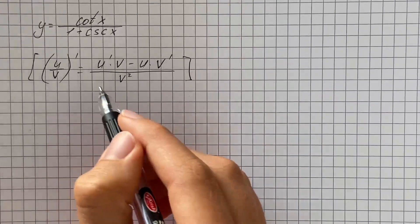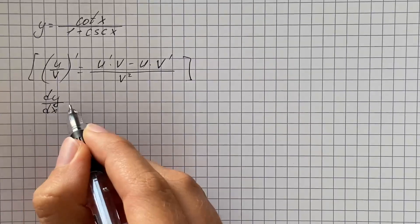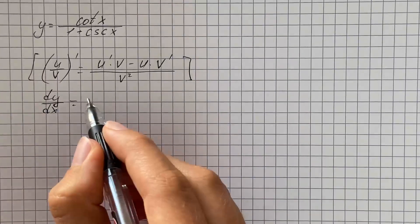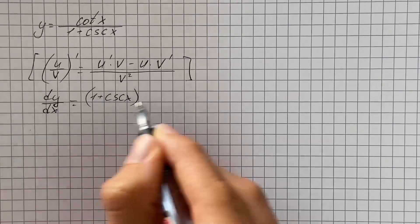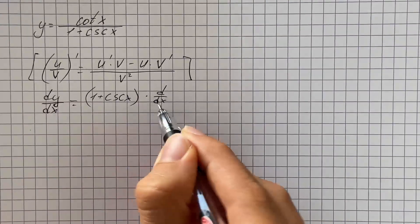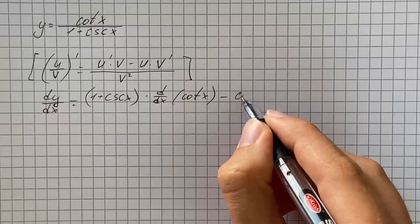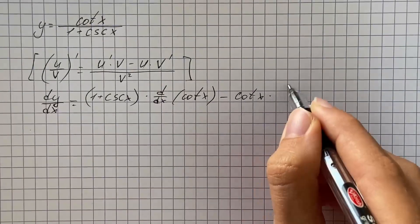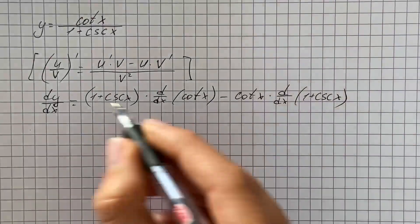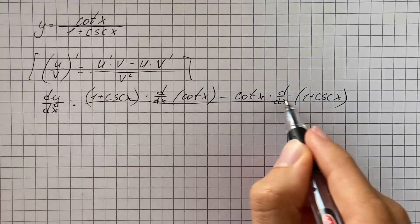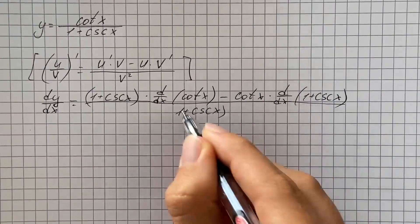So we're going to apply this to our function and differentiate with respect to x. That's going to be: one plus cosecant x, times the derivative of cotangent of x, minus cotangent of x times the derivative of one plus cosecant of x, all over one plus cosecant of x squared.